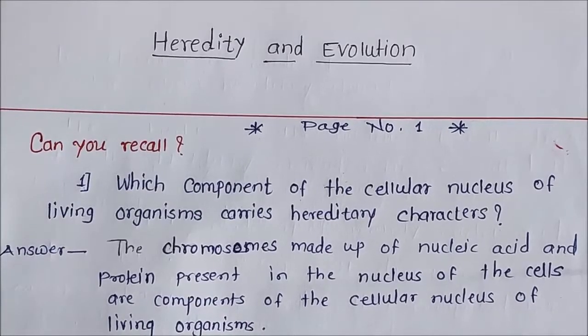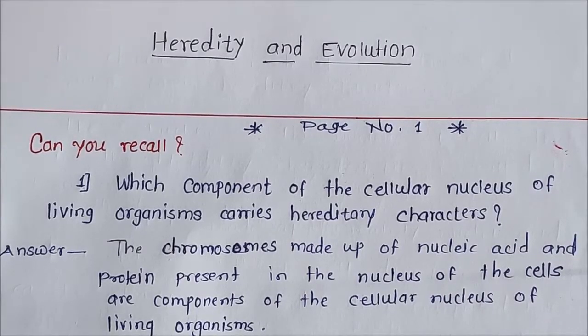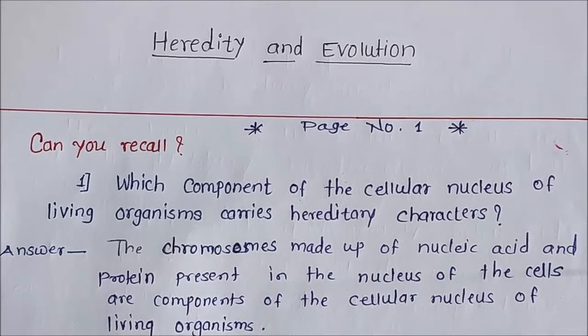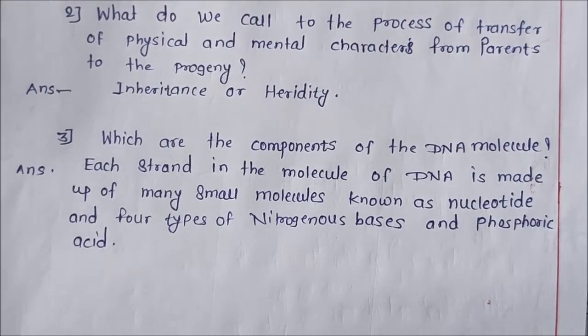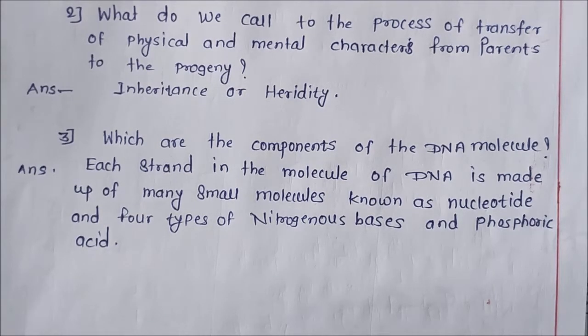Therefore, there are variations in skin color. Now we see some introductory questions from the textbook, page number 1. Can you recall which component of the cellular nucleus of living organisms carries hereditary characters? The answer: chromosomes made up of nucleic acid and protein, present in the nucleus of the cells, are the components of the cellular nucleus of living organisms. The process of transfer of physical and mental characters from parents to progeny is called inheritance or heredity.